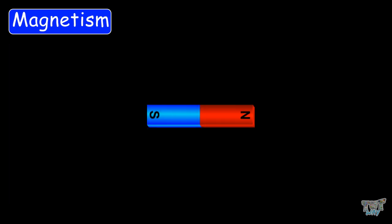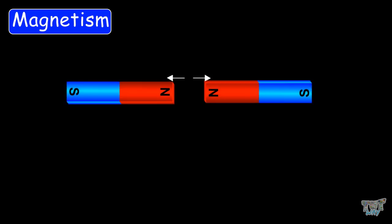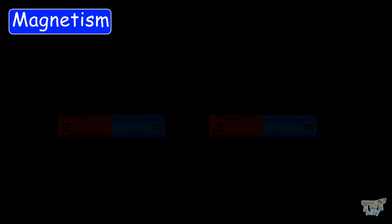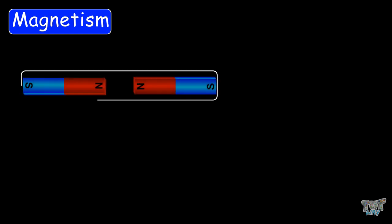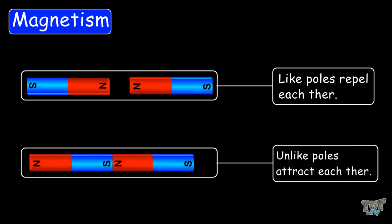Similarly, magnets have two poles: the north pole and the south pole. When we bring a north pole near a north pole, they repel each other. When we bring a south pole near a south pole, they also repel each other. And when we bring a north pole near a south pole, they attract each other. So, like poles repel each other and unlike poles attract each other.